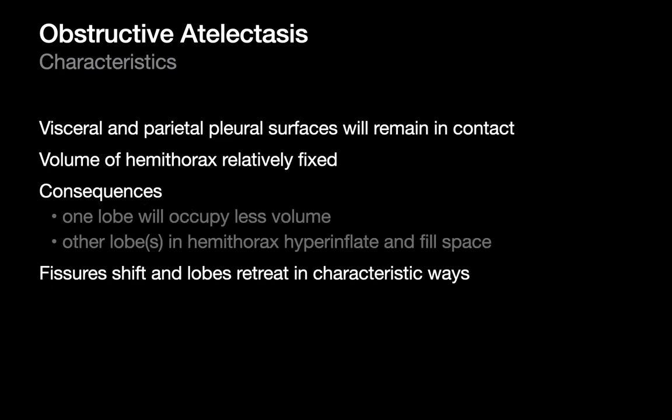When obstructive atelectasis occurs, it happens at the lobar level, and lobes collapse in very predictable ways. It probably takes about 24 hours of airway obstruction for these signs to manifest. There are five prototypical appearances of obstructive lobar atelectasis to recognize. If one lobe collapses, other lobes will expand to fill the space, and fissures will shift in predictable ways.